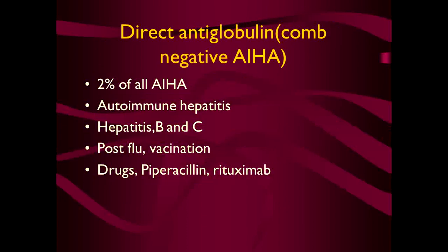The Coombs-test negative autoimmune hemolytic anemia comprises about 2% of all cases. The commonest example is autoimmune hepatitis, a very difficult disease to treat — some patients are steroid responders, others are not. Other causes include hepatitis B and C, and flu can cause Coombs-negative hemolytic anemia. Similarly, following vaccination for some diseases, the patient can develop it. Drugs like piperacillin and rituximab, commonly used for rheumatoid arthritis, can also cause Coombs-negative autoimmune hemolytic anemia.